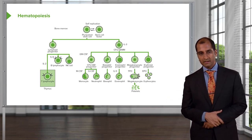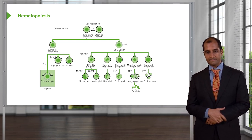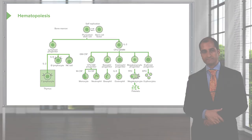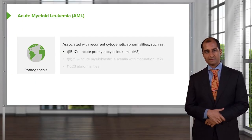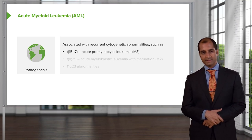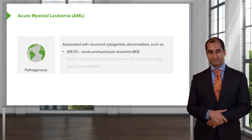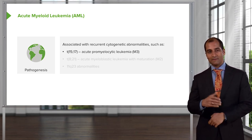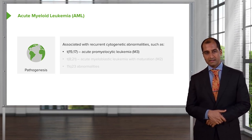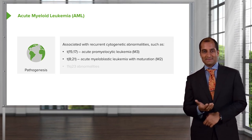Our topic is AML — acute myelogenous leukemia. Our focus will be M3. You must memorize translocation 15;17 for M3. Why that's important is the fact that you can treat a patient with AML M3 type with a drug — a vitamin derivative known as ATRA, all-trans retinoic acid. How is it possible to specifically treat M3 with ATRA? The translocation 15;17 gives rise to PML-RARα — a retinoic acid receptor alpha. That's the receptor for vitamin A alpha.